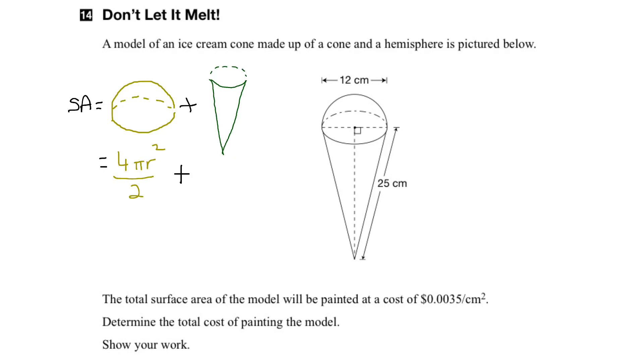And we're going to add to that the lateral surface area of the cone. Here we only want the outside of the cone. We don't want the circle part at the top because that's going to be covered by the half a sphere. So we only want the lateral surface area.